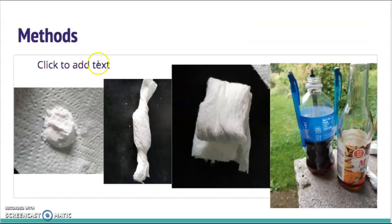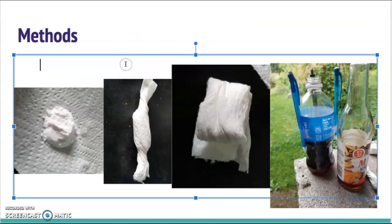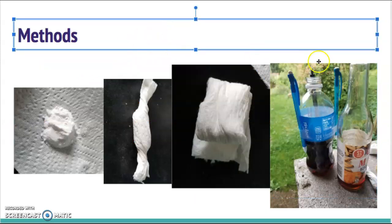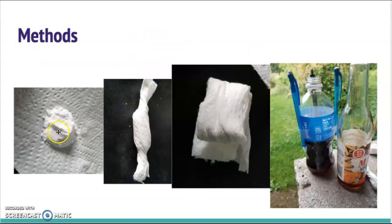This was me performing the experiment. I put the baking soda inside of the paper towel, wrapped it very tightly, and tried to secure the ends. This is the cork that I created for my plastic bottle. Then this was the vinegar being placed into the plastic bottle. The vinegar was the first thing to go in.